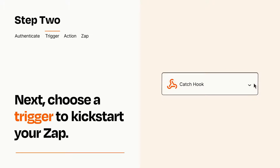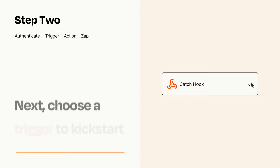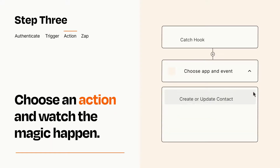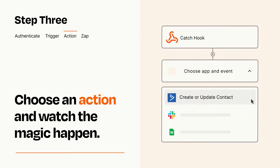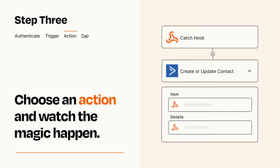This last part is where the magic happens. Choose the action you want to happen in your target app. You'll see a bunch of fields where you can specify the details of your Zap. You can type free form text or pull data in from your trigger step as needed.